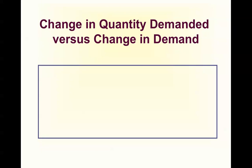This is the second part of N. Gregory Mankiw's Chapter 4, and here we're going to be looking at the individual components of supply and demand.